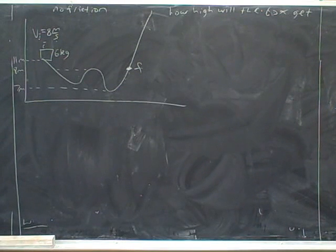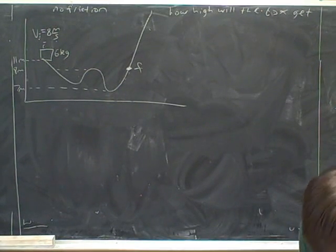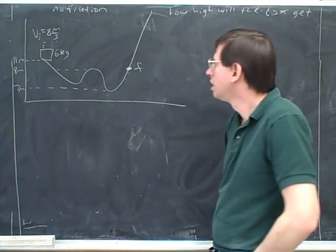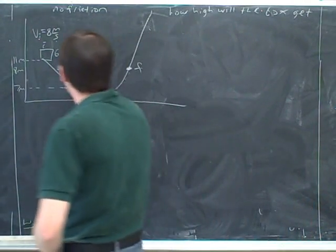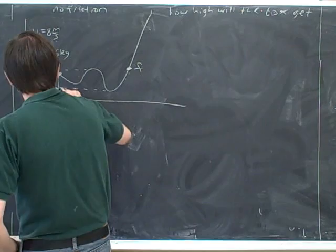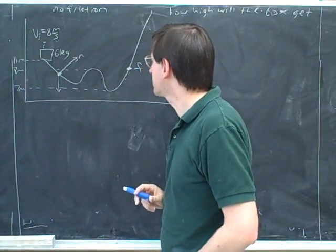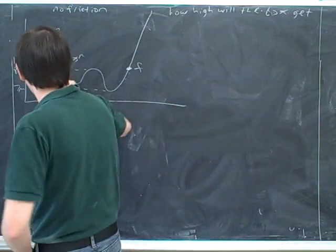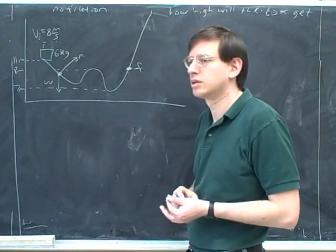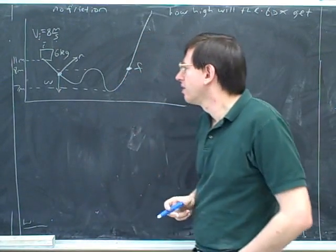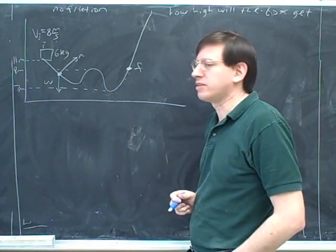And then identify all forces on the object. So again, we just have the weight and the normal force. And the normal force is always going to be perpendicular to the track, so there's not going to be any work done. Here's the weight. Here's the normal force. And weight is a conservative force, and the only non-conservative force is doing the work. Good. So that's great.